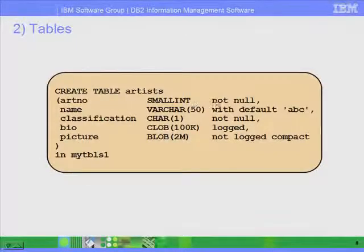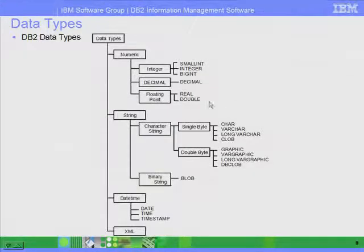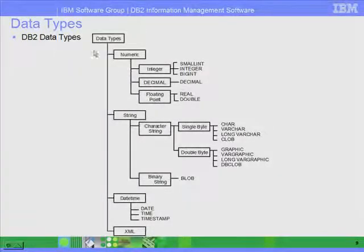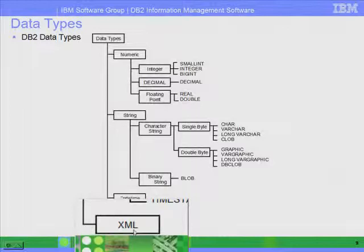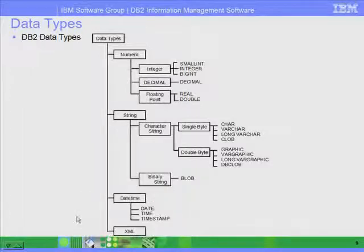Defining a table is as usual: you specify a column, the data type, whether it's NOT NULL or NULL, and whether it has some default value. Within tables you have to specify columns, and columns have to have a data type. These are the data types supported in DB2. The new one starting with DB2 version 9 is the data type XML.